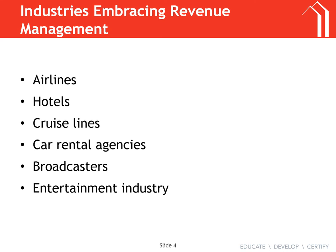The airline industry started revenue management, and other industries realized their products share a key characteristic: they are perishable. Perishable means they expire — once that airplane takes off, you can't put someone in that seat midair. Once a cruise leaves the harbor you can't add someone. Same with car rentals. If you don't sell your product, it's gone. That perishability is one of the key criteria for effective revenue management.